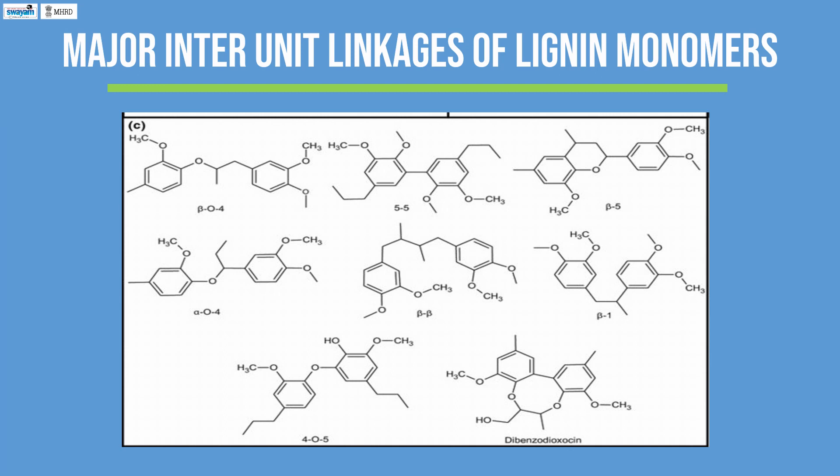Monolignols are incorporated to produce the biopolymer lignin by the process of end-wise polymerization. The oxidized monolignol radicals cross-link with radicals formed on the free phenolic end of a growing lignin polymer. The major inter-unit linkages of lignin monomers are shown in the diagram.